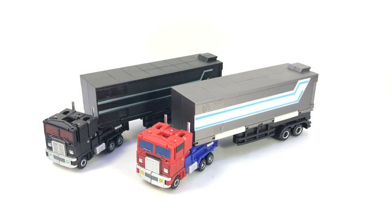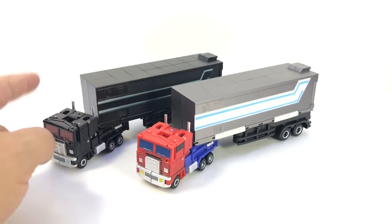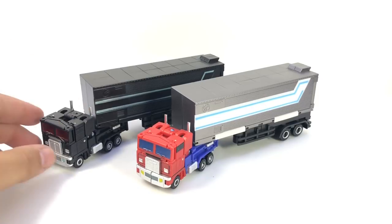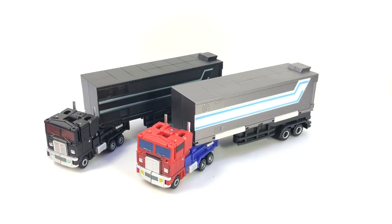All right, here is the video review for DX9's War in Pocket Dutch and Plissken, which should be fairly obvious once you hear those names as to which one is which. Basically Optimus and Nemesis Prime from the War in Pocket line.